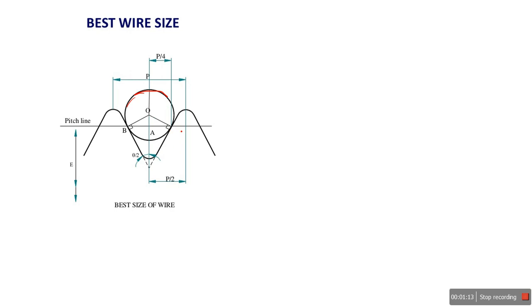We're going to find out, see, I'm giving the point name as C. We have to find out the OC, or we are going to find out the radius of this wire. Before that, I'm considering this triangle.